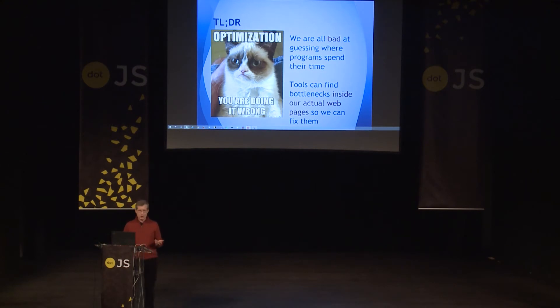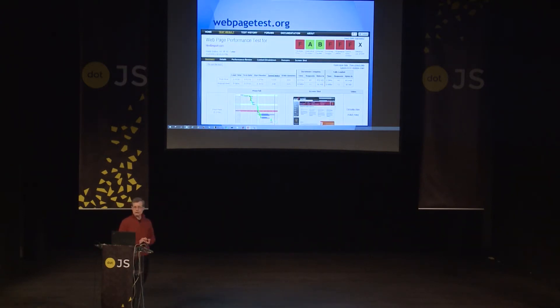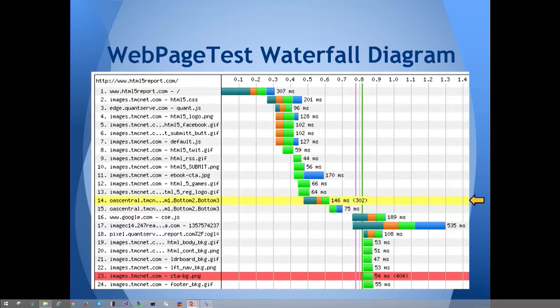You can do those optimizations near the end of your process. Tools can help us find bottlenecks. Webpagetest.org is one example — you enter your URL and it analyzes it, telling you things you can do better as far as delivering content, whether you can optimize the way images are delivered. Web developers should also know what a waterfall diagram is — it's very important to understand the way resources are delivered to the browser and make sure they're delivered as efficiently as possible.